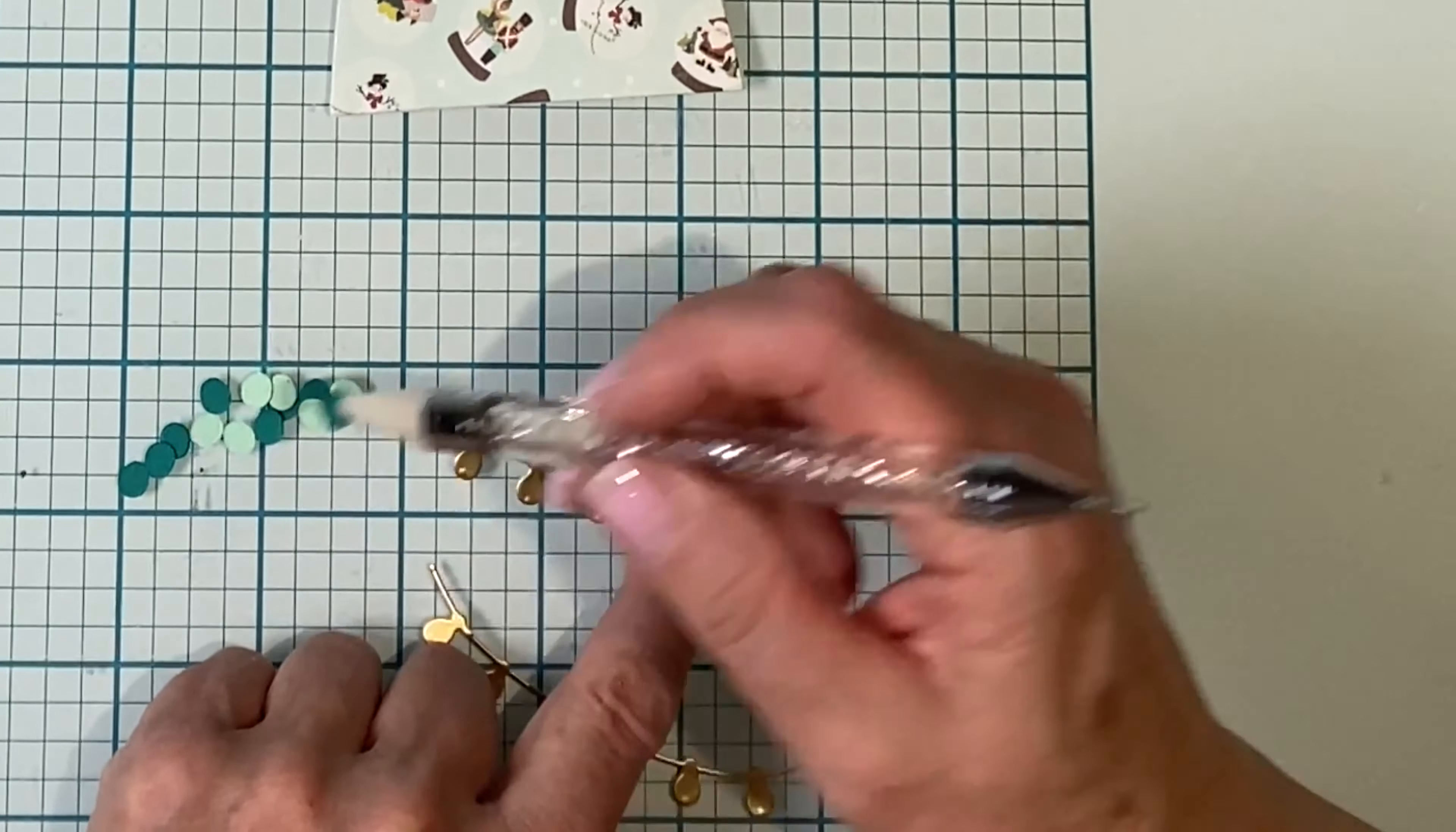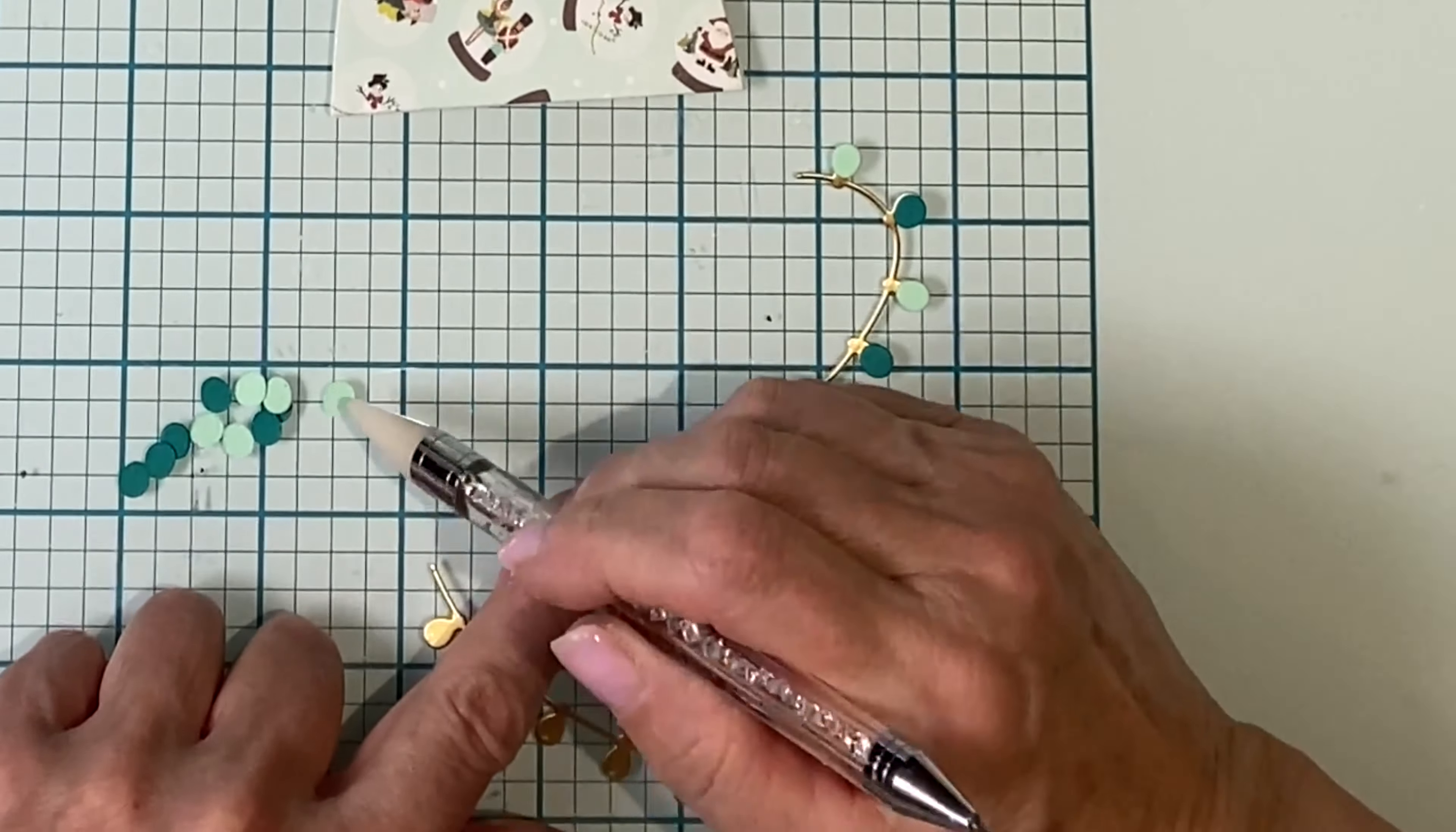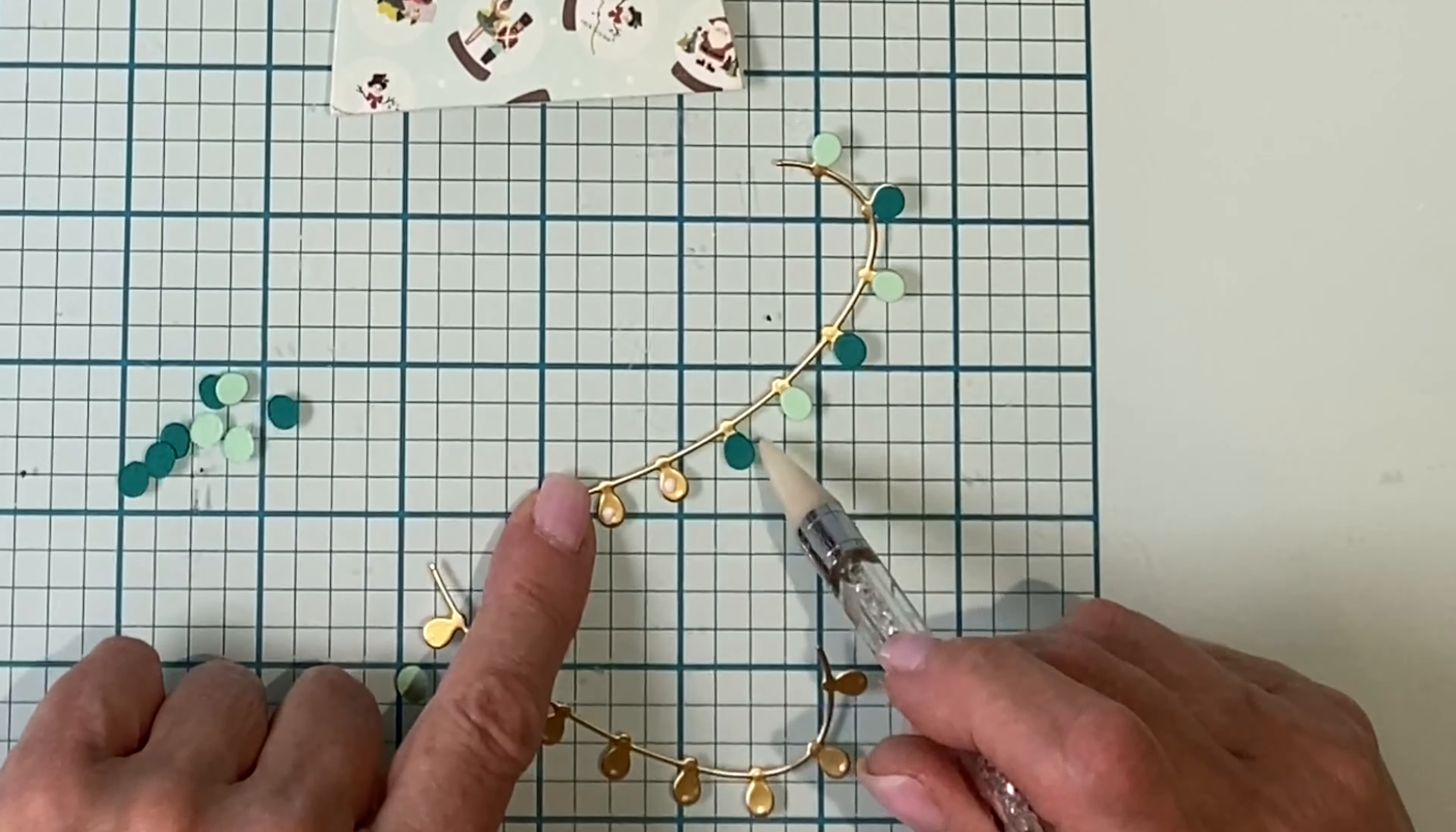The small die of the month includes two strings of lights. I'll be using the larger one which has been die cut two times from gold foil cardstock. The Christmas lights have been cut from mint cardstock, the same cardstock that was used for the collar of the sweater, and also a pretty dark teal. The lights are alternated onto the strings.